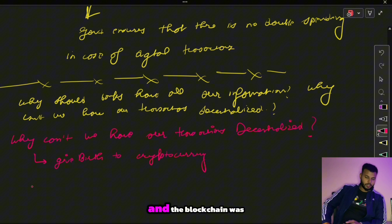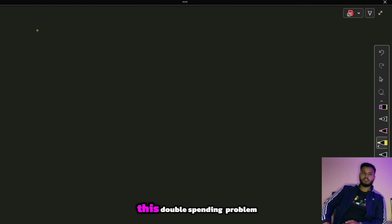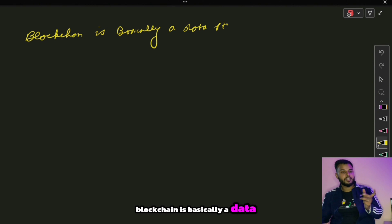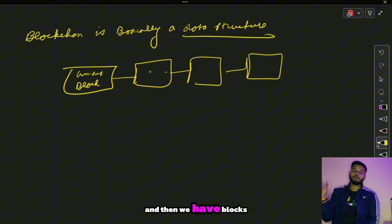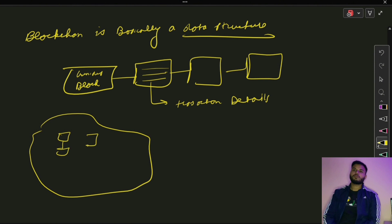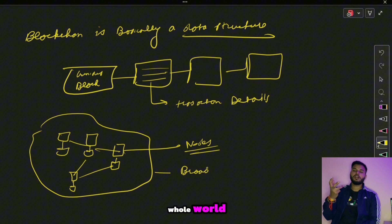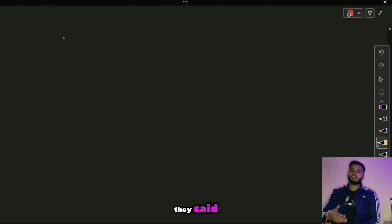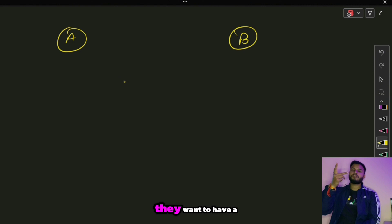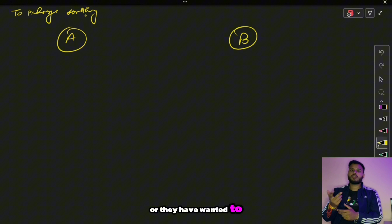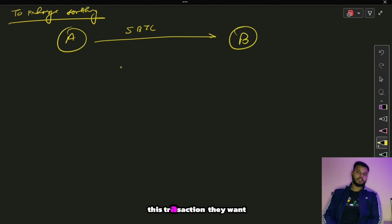Blockchain solved the double spending problem. A blockchain is a data structure — a chain of blocks. The first block is called the genesis block, and subsequent blocks are added to it, each containing transactions taking place in the network. The blockchain network consists of nodes, which are computers of users all over the world. For example, if person A wants to transfer five bitcoin to person B, this transaction is added to the blockchain.